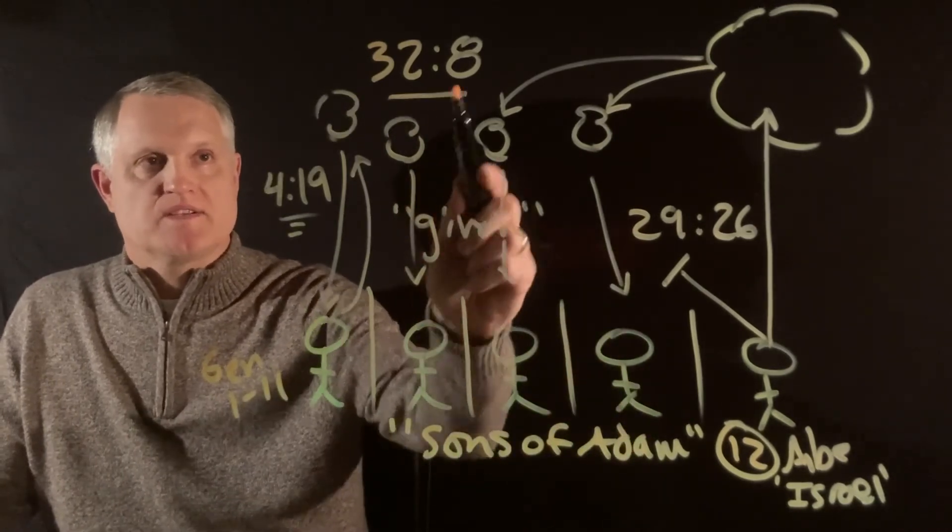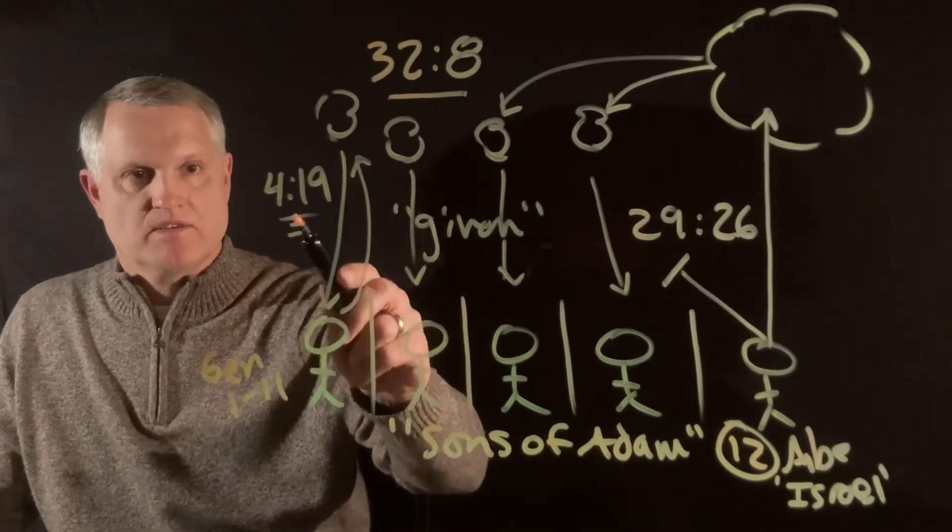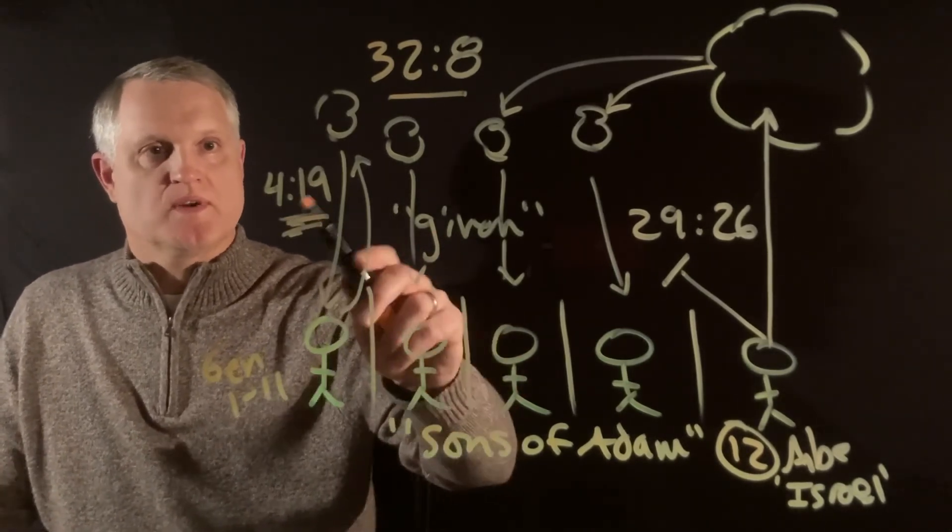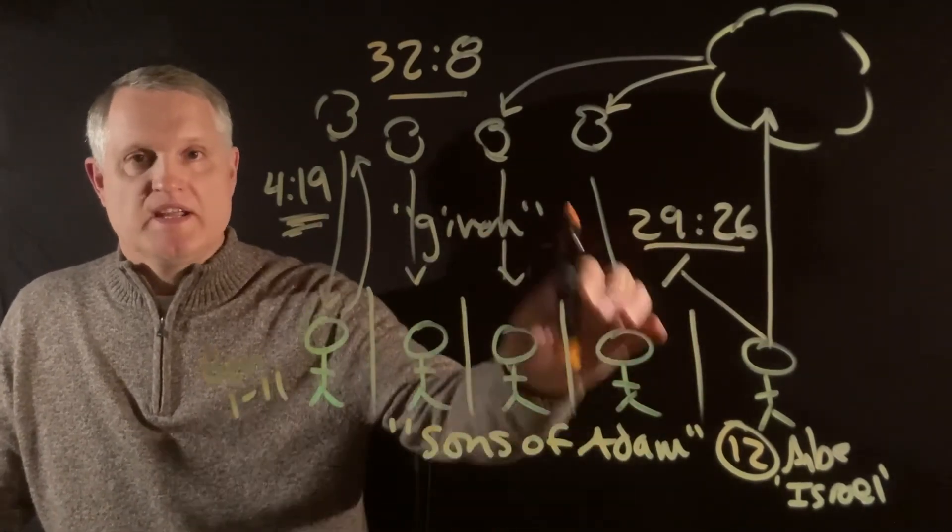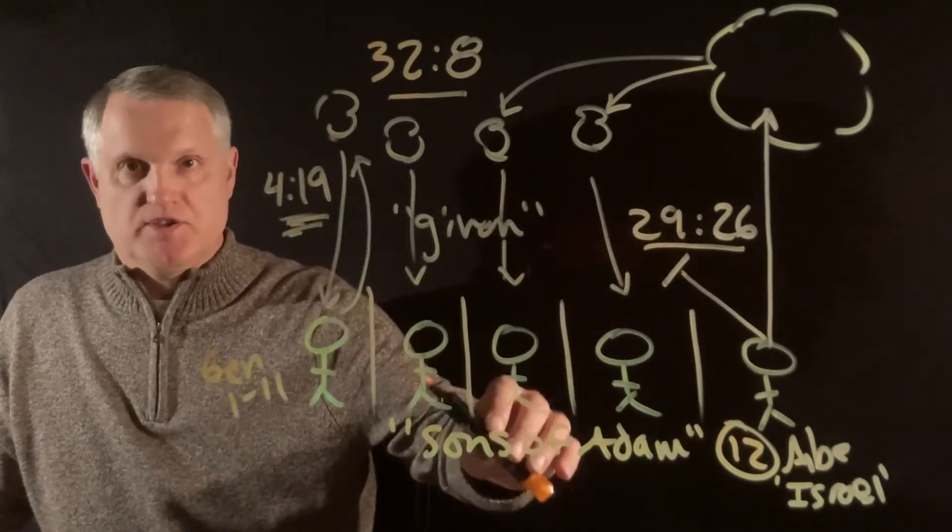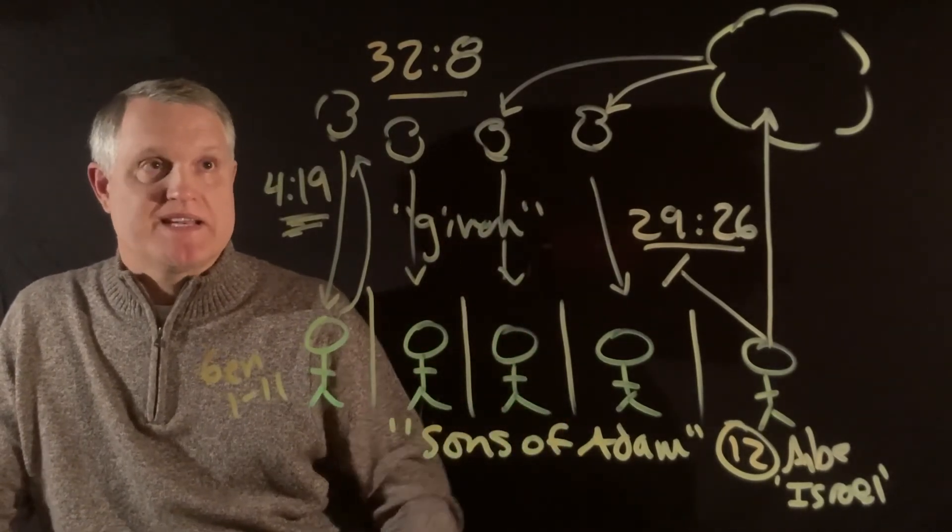So 32:8 is not saying anything new except very starkly. He's trying to clarify, Moses is, what he's already said in these other two passages, that God is running the world through managers, as it were, divine managers who have been set over the nations. But notice verse nine,